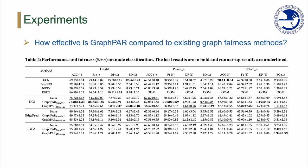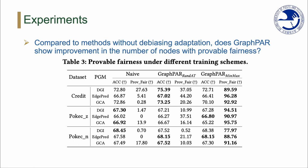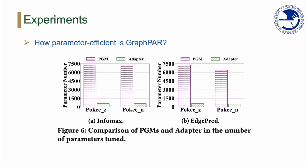Extensive experiments demonstrate that Graph PAR achieves state-of-the-art prediction performance and fairness. To additionally guarantee how fair the classification is, we evaluate the provable fairness of Graph PAR compared with methods without debiasing adaptation. With the help of Graph PAR, around 90% of nodes have provable fairness. We also demonstrate the parameter efficiency of Graph PAR: as shown in the following figure, the number of tuned parameters in Graph PAR is 91% smaller than in the PGM.